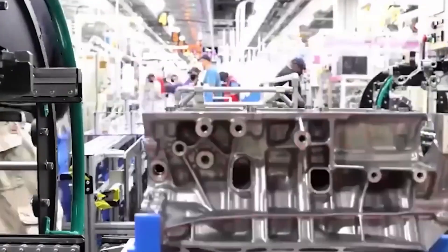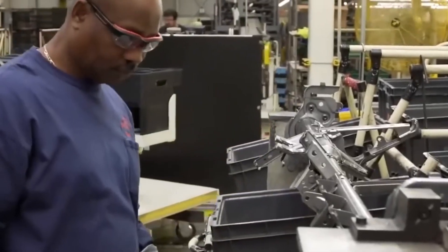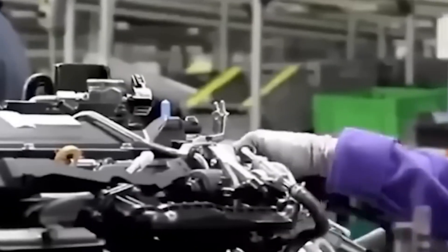However, there are challenges to overcome. Hydrogen production and infrastructure need to be more sustainable and widespread. The hydrogen engine is also complex and costly to produce and maintain. Despite these hurdles, Toyota's commitment to sustainable transportation is evident through its diversified approach, which includes both hydrogen and electric technologies.